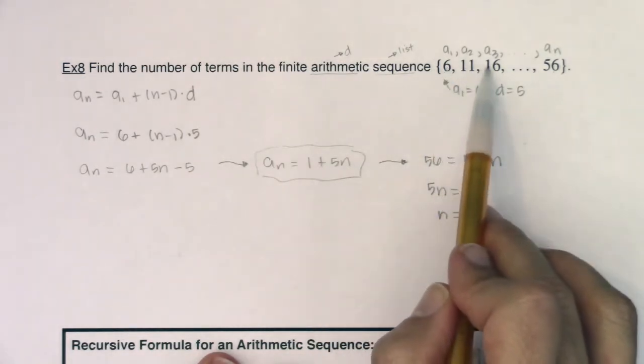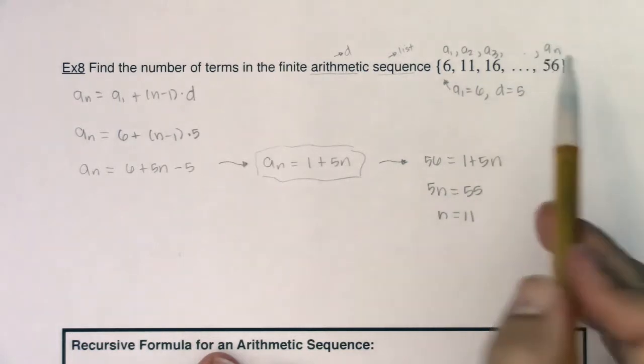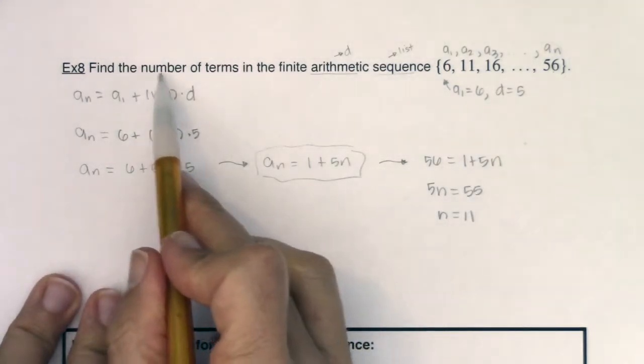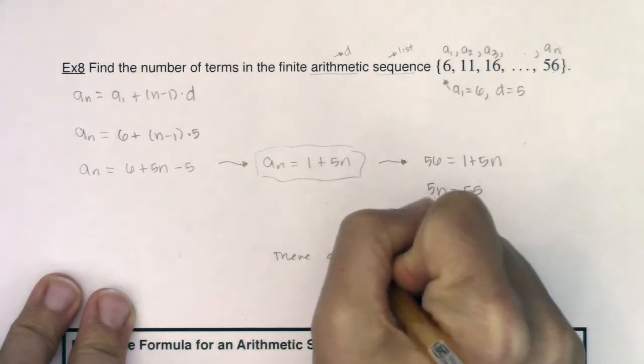So there are 11 terms in the sequence. That is literally the number of terms—there are 11 terms.